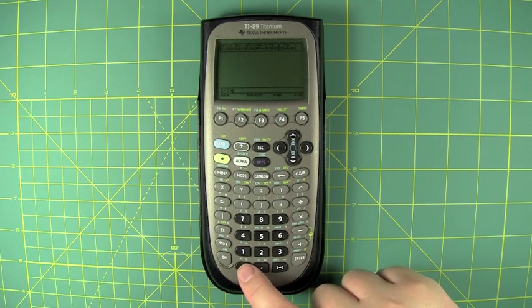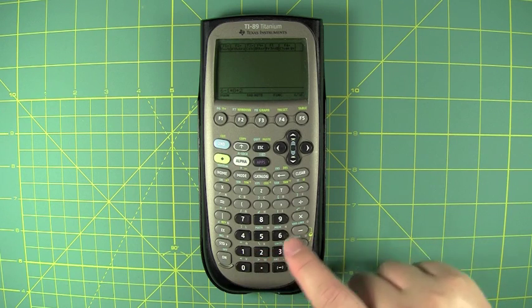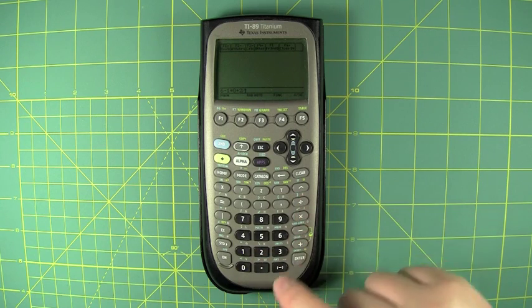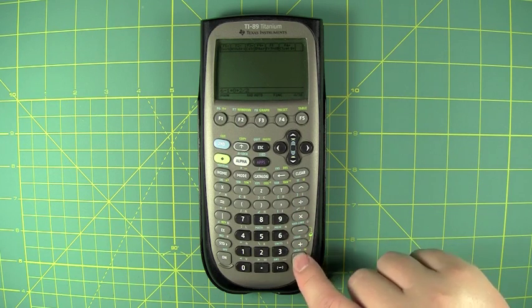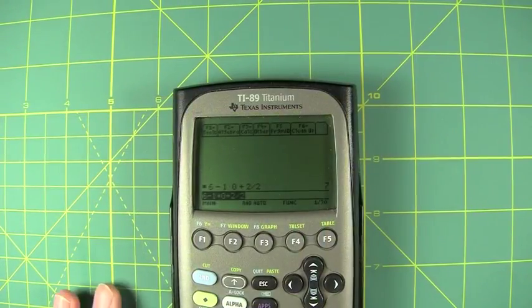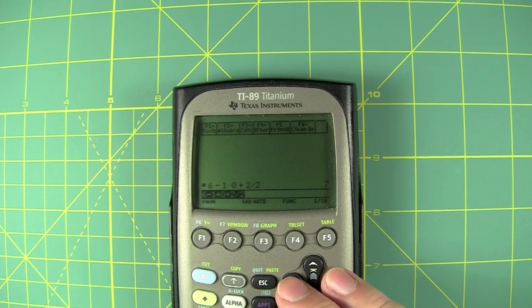One times zero plus two divided by two. Push enter and our answer is seven. Here, let's zoom in on that. Now we're a bit more zoomed in, should be easier to see. All right, so as you can see the answer is seven.